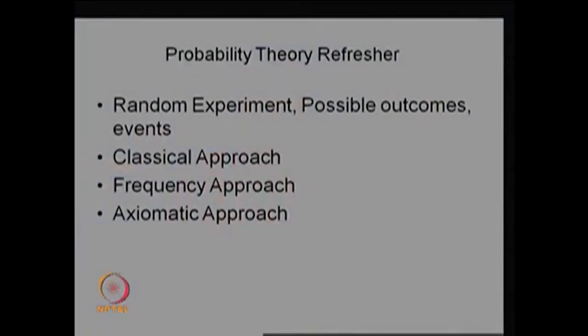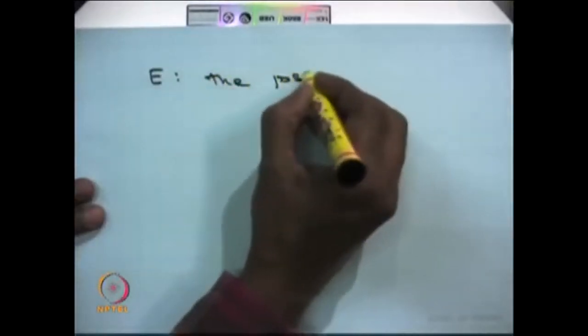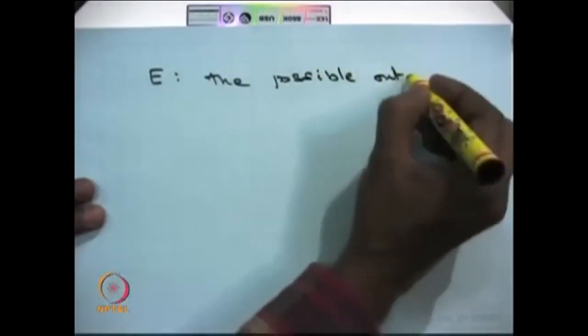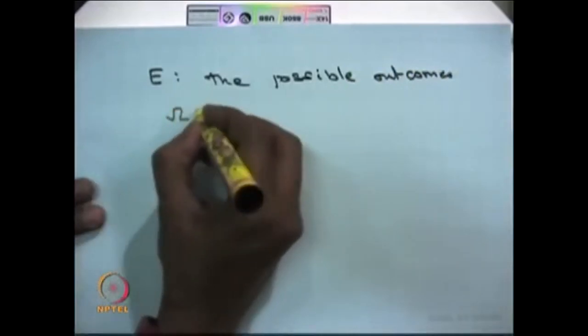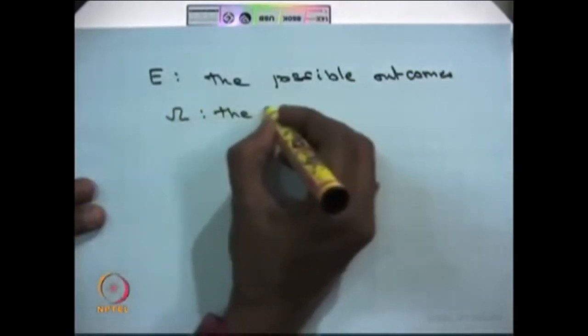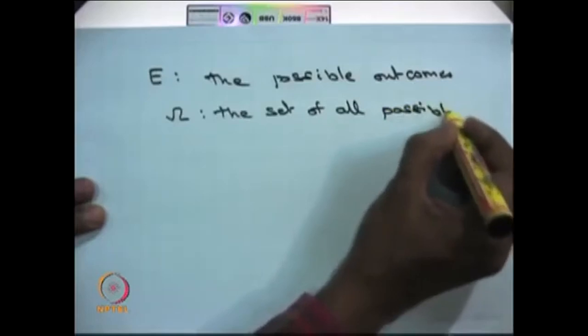First we need to define what is a random experiment. A random experiment is an experiment in which you can list out all the possible outcomes before the experiment actually takes place. The collection of all possible outcomes is denoted by the word omega. So omega is the set of all possible outcomes.